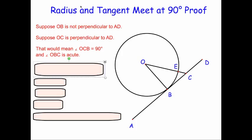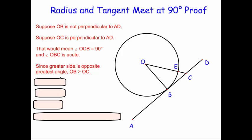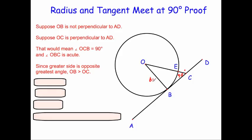Another thing to remember is that in a triangle, the biggest side is opposite the greatest angle. So if this angle at C is 90 degrees, that would mean the biggest side is OB — the side opposite the right angle. It would mean that OB is bigger than OC.